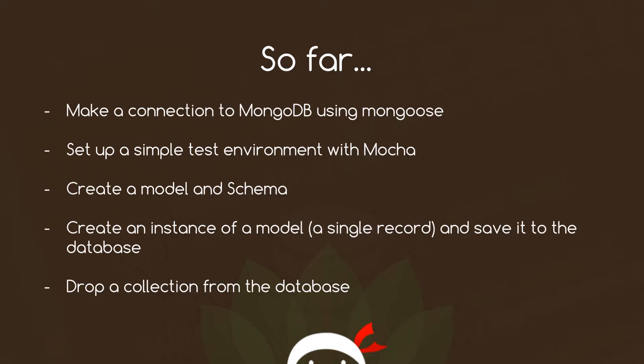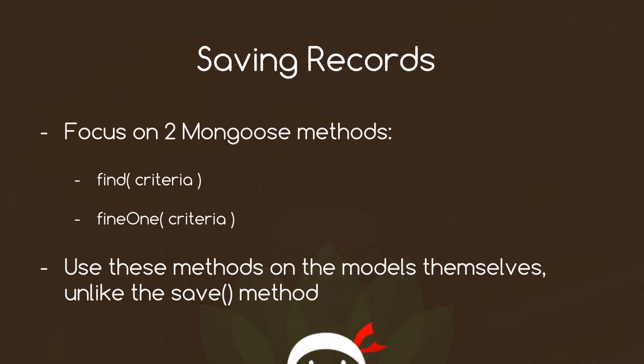In the last tutorial we saw how we can drop an entire collection from the database, and we did that before each block of tests. So now I want to move on to finding records, and I'm going to focus on two Mongoose methods: find and findOne.